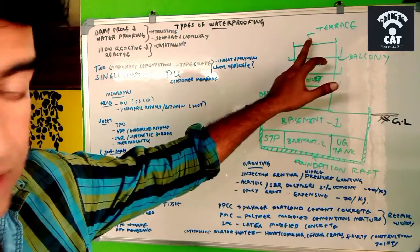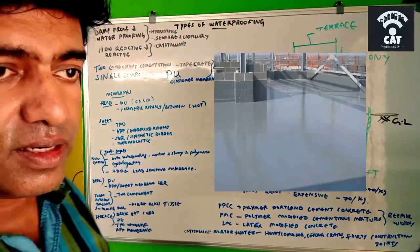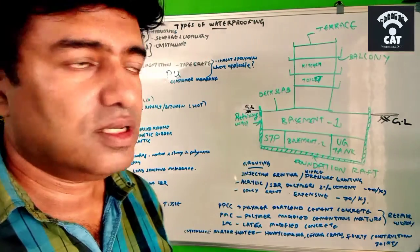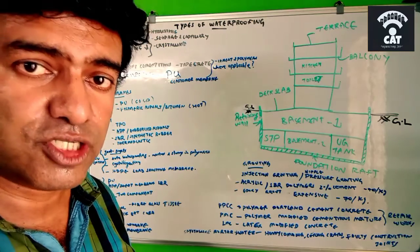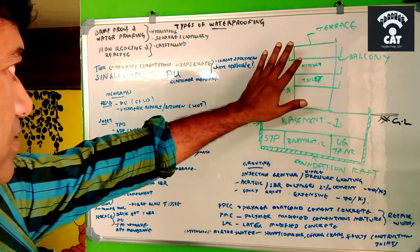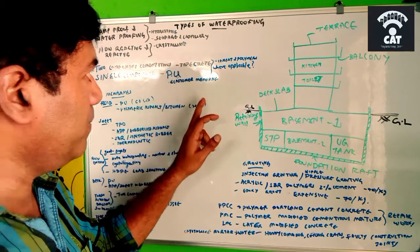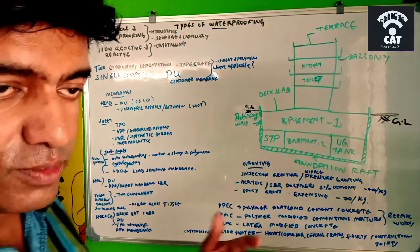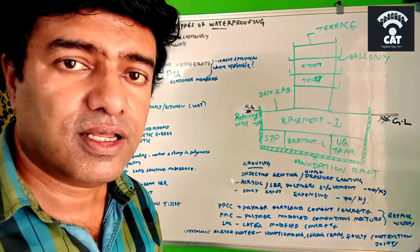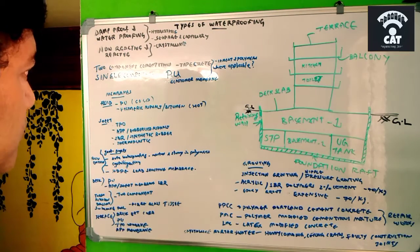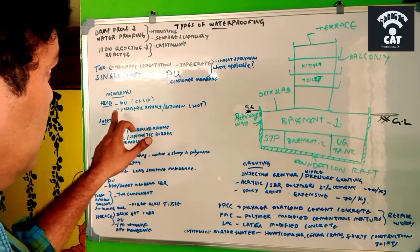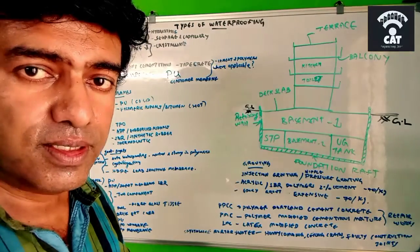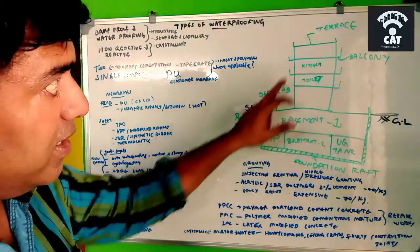The single-component material used for deck and terrace areas is polyurethane (PU). It can be brushed or pasted and comes in different forms — fluid or sheet membrane. In fluid form, we can use polyurethane or polymeric asphalt/bitumen for deck and terrace waterproofing.